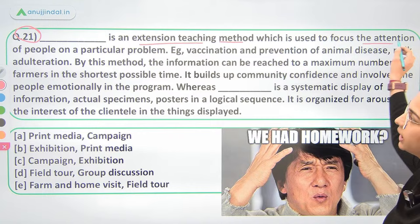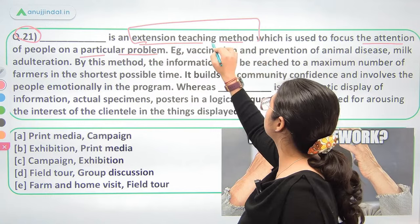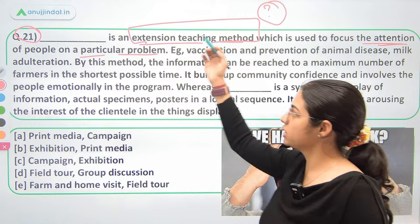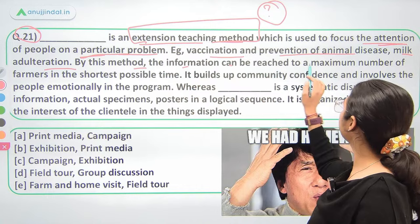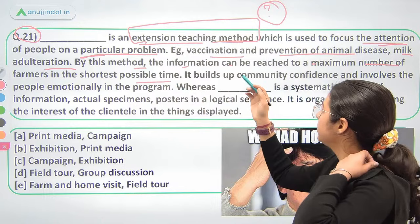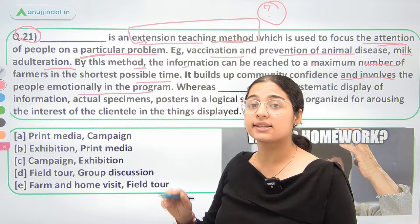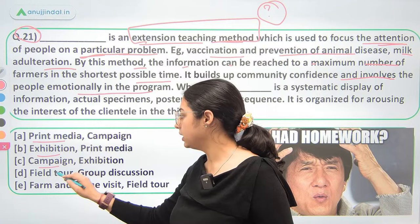Question 21: Dash is an Extension Teaching Method which is used to focus the attention of people on a particular problem — like vaccination and prevention of animal disease, milk adulteration. By this method, the information can reach a maximum number of farmers in the shortest possible time. It builds community confidence and involves people emotionally in the program. So what extension teaching method are we talking about?